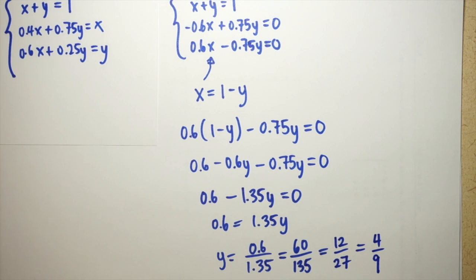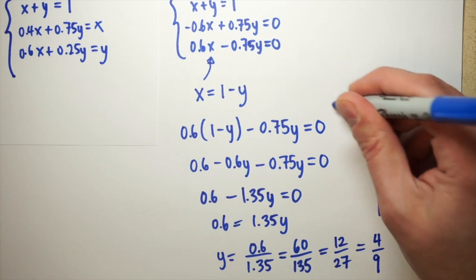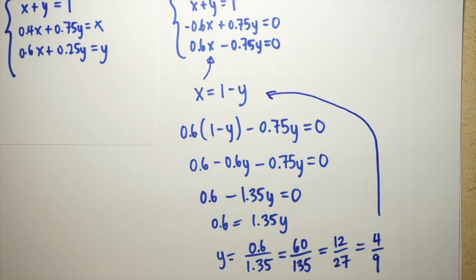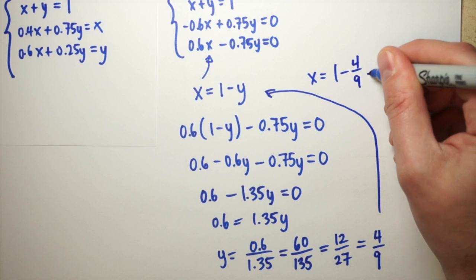Once we have our y value, we can plug this back into the x, right up here, to find out the corresponding x value. So if y is equal to 4 ninths, x is going to be 1 minus 4 ninths, which is 5 ninths.